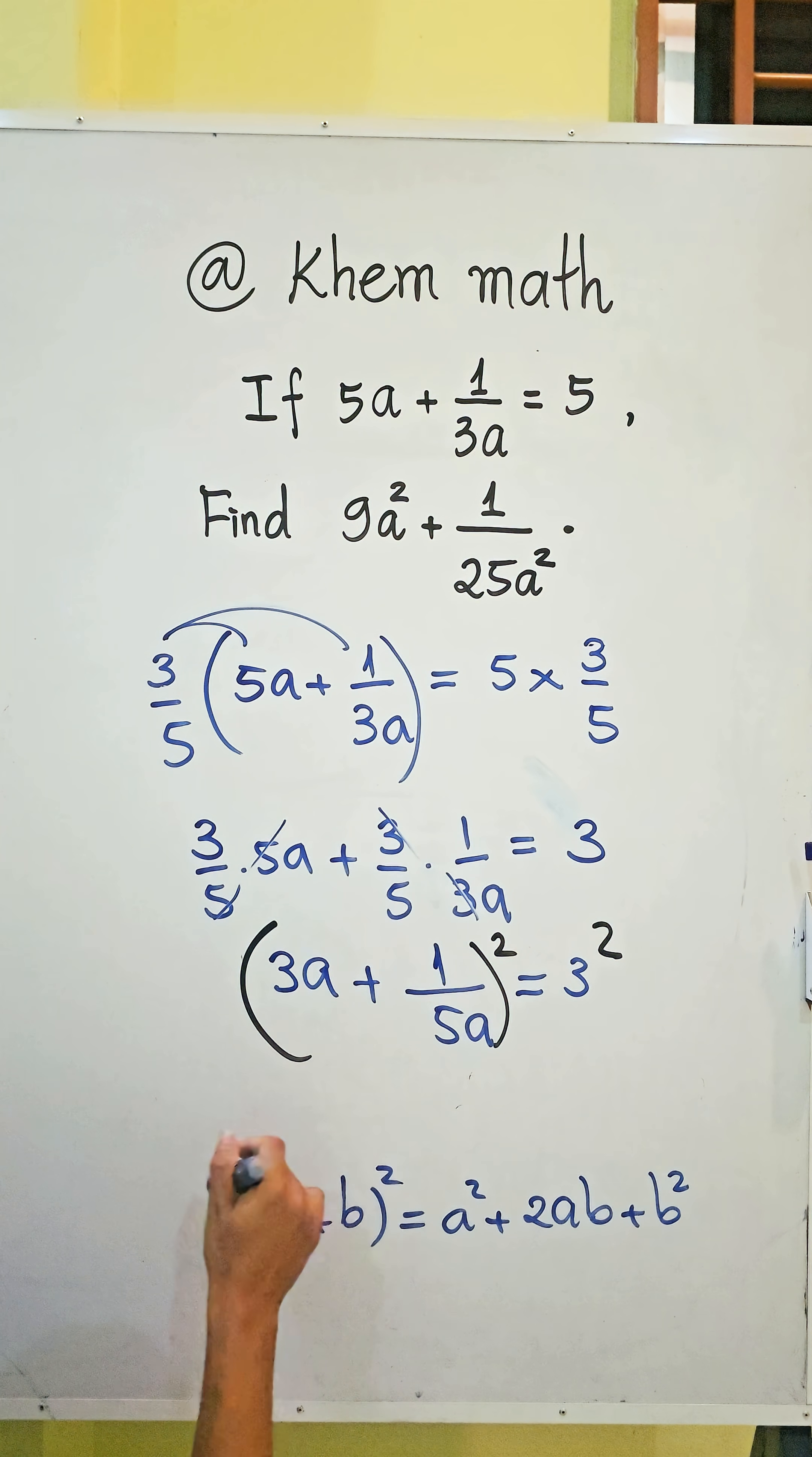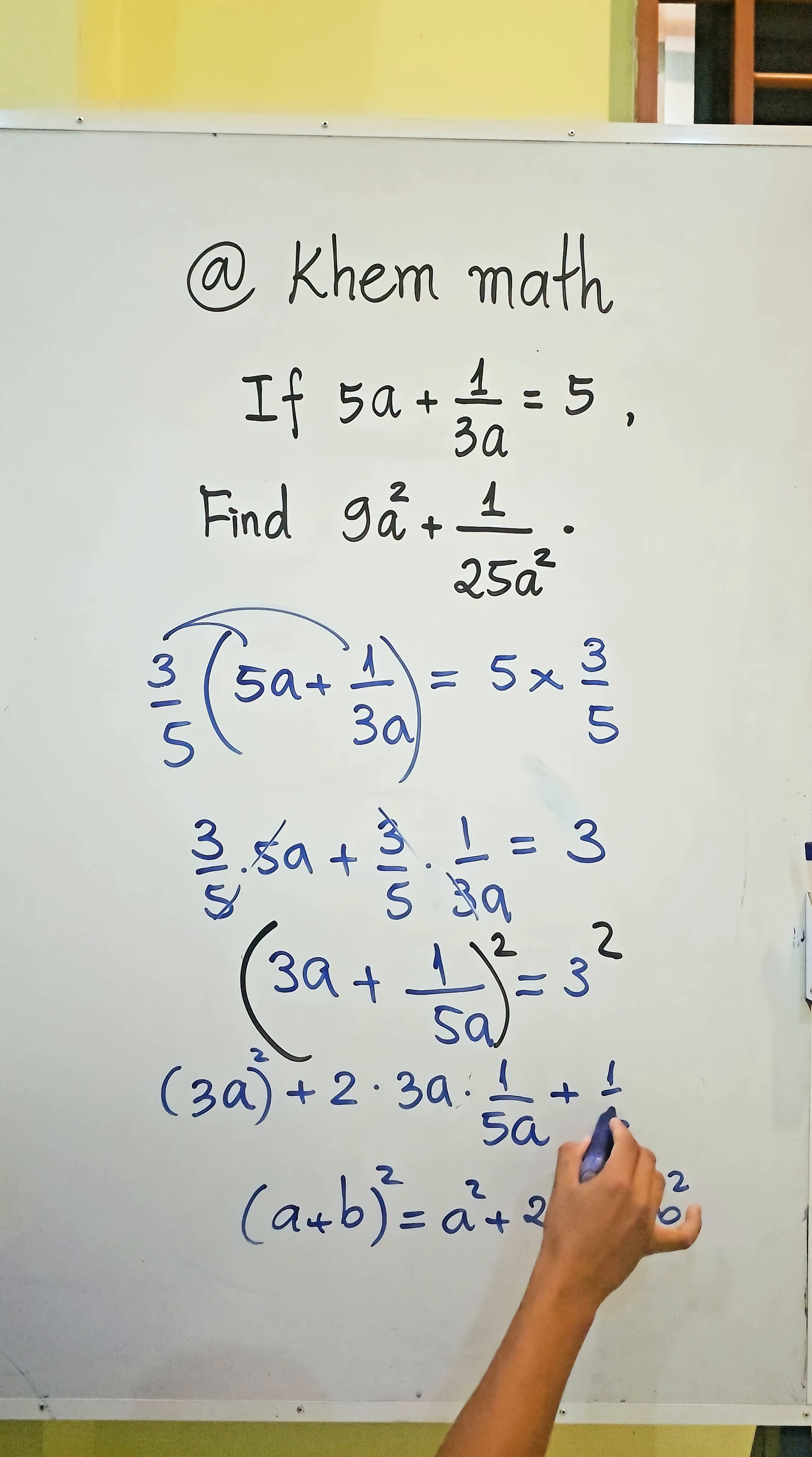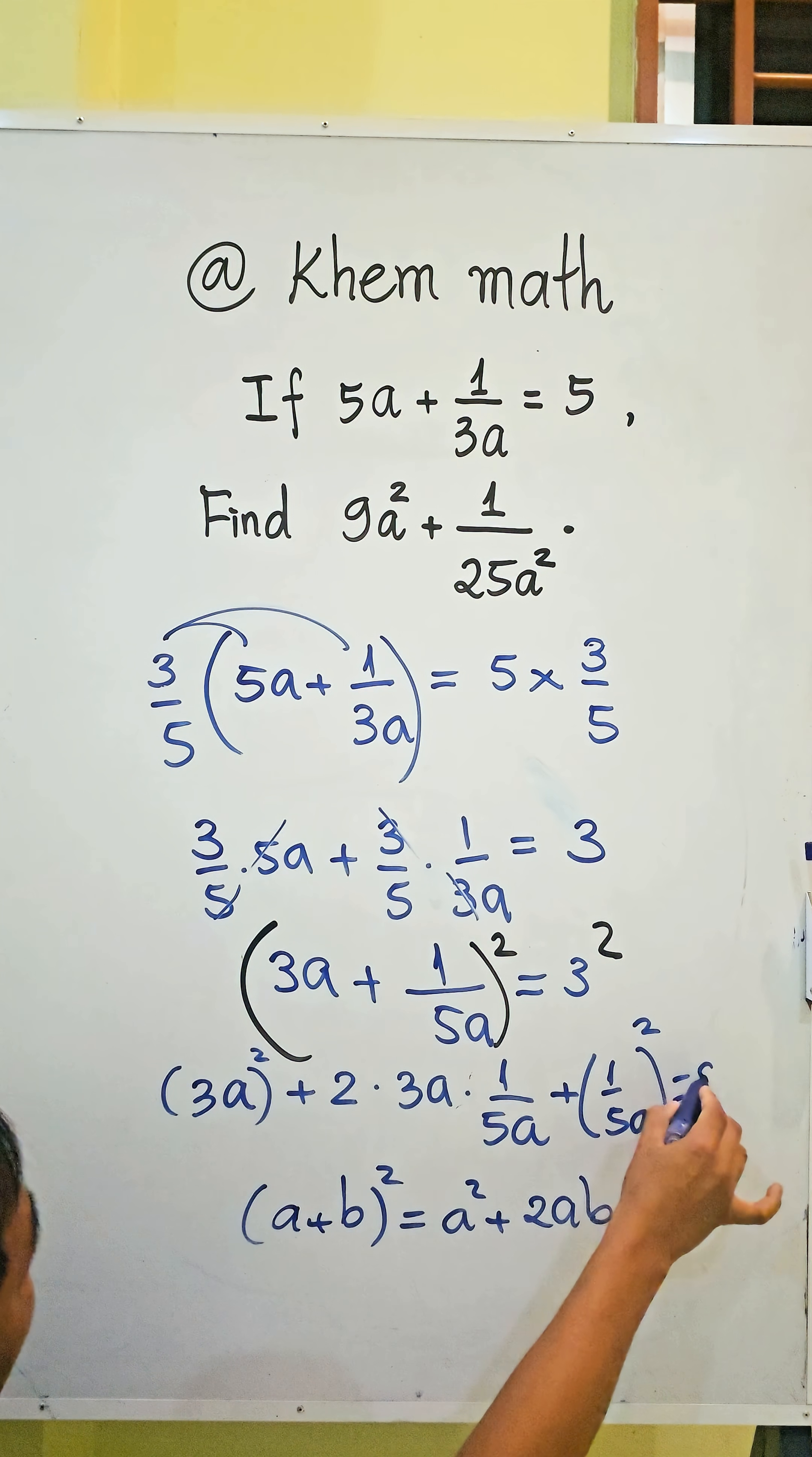So here we get 3a squared plus 2 times 3a times 1 divided by 5a plus 1 divided by 5a all square equals 9.